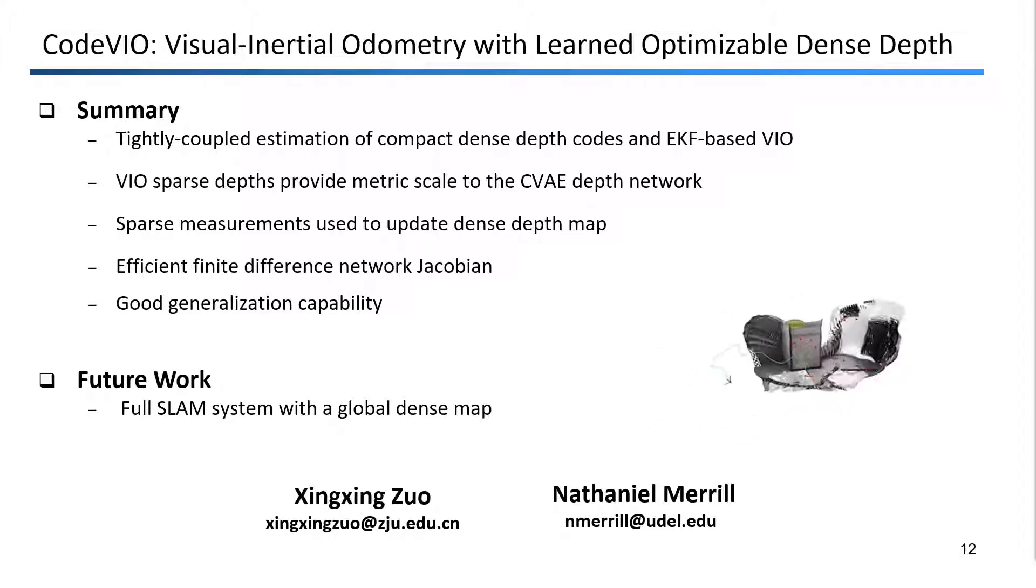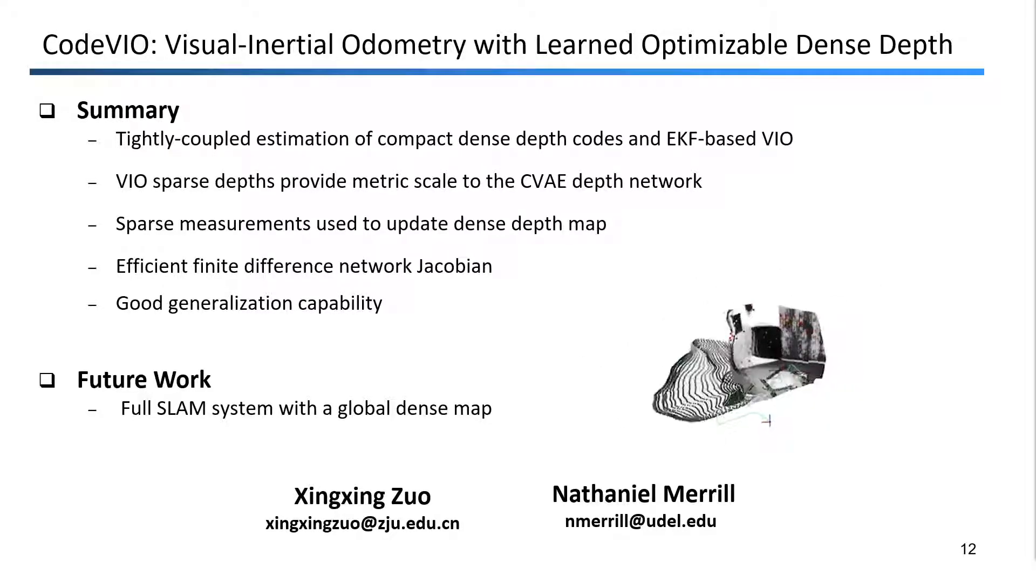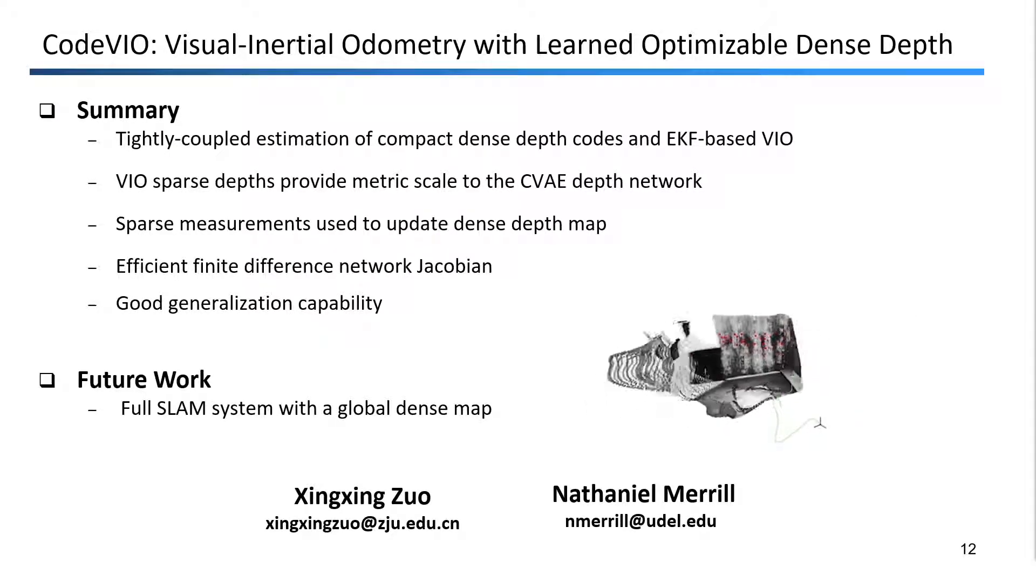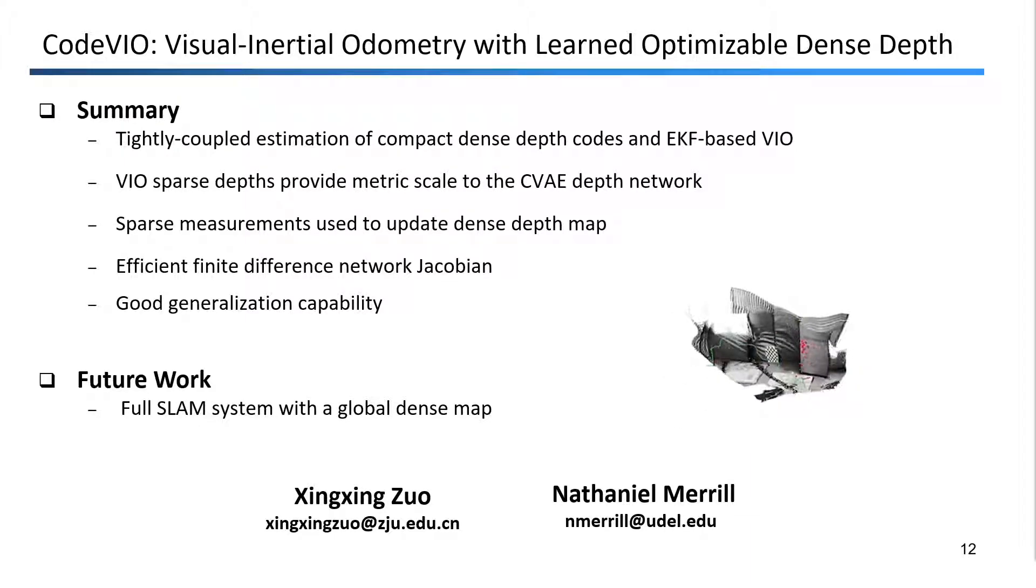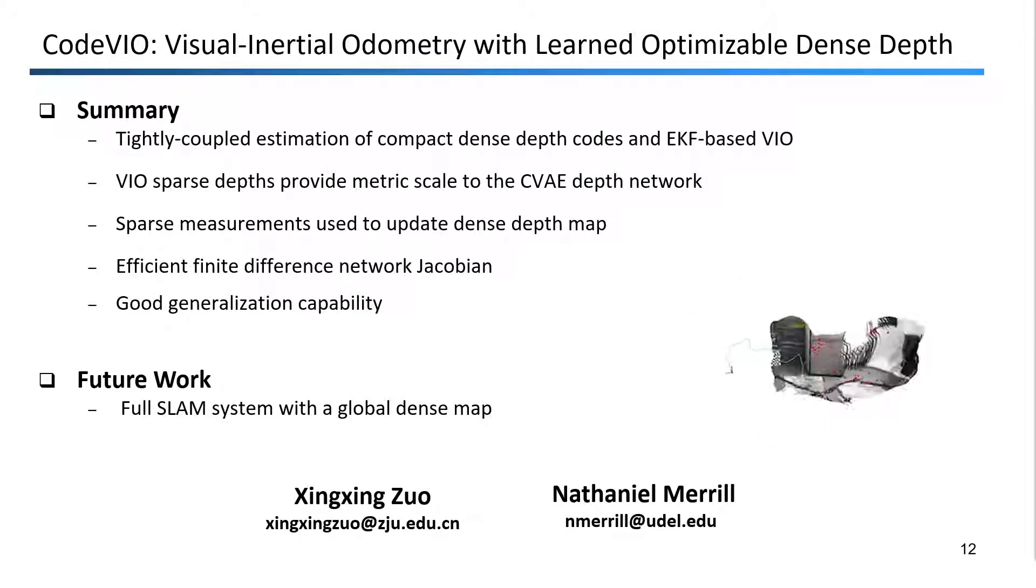In summary, we have presented a formulation for the tightly coupled estimation of compact dense depth codes and lightweight EKF-based VIO. While the IMU provides scale to our whole system, we leverage the VIO sparse depths to provide the metric scale to the CVAE depth network, as opposed to the other way around in monocular systems. While previous works relied on dense residuals for code updates, we only used sparse measurements to update the dense depth maps, and have showed that the depth quality is still significantly improved with just these sparse measurements. We also provided an extremely efficient method to calculate the network Jacobian using a finite difference method. Our system is shown to have good generalization capability by testing on the UROC dataset, which the network did not see during training.